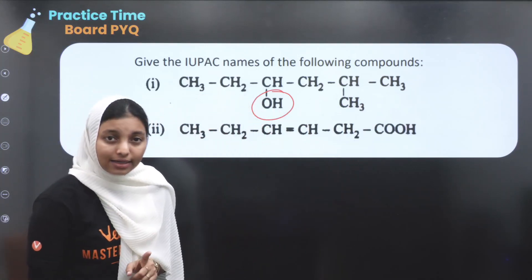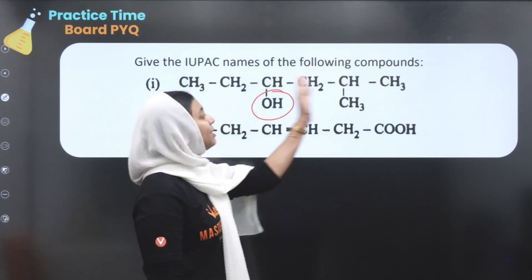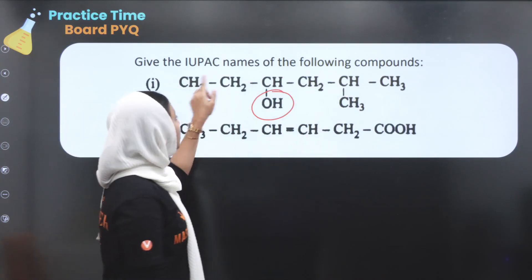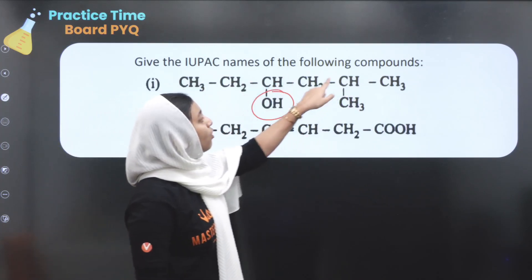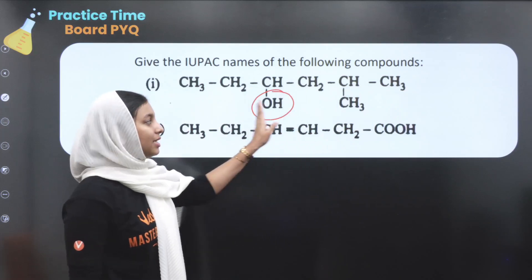The longest carbon chain is 1, 2, 3, 4, 5, 6. That means we have identified the longest carbon chain with 6 carbons.